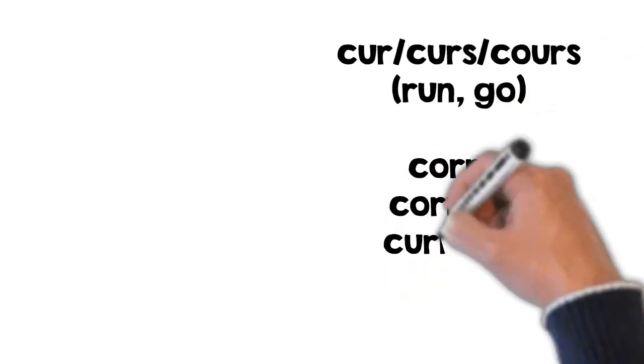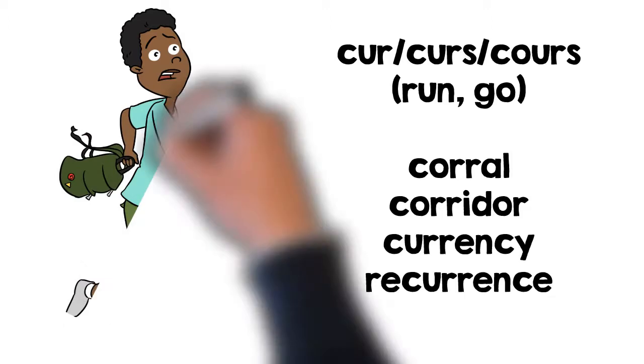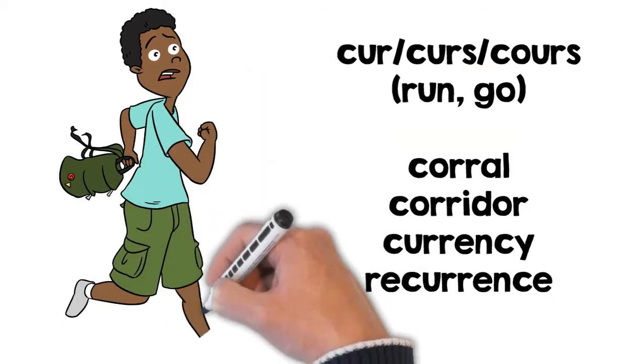The root word cur, curs, and cours mean run and go. Some words containing this root include corral, corridor, currency, and recurrence.